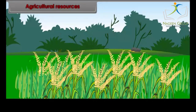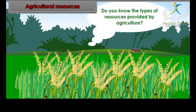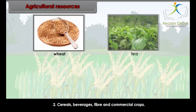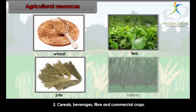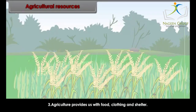The resources which we derive from agriculture are called agricultural resources. Agriculture provides raw materials to agro-based industries, including cereals, beverages, fiber, and commercial crops. Agriculture provides us with food, clothing, and shelter.